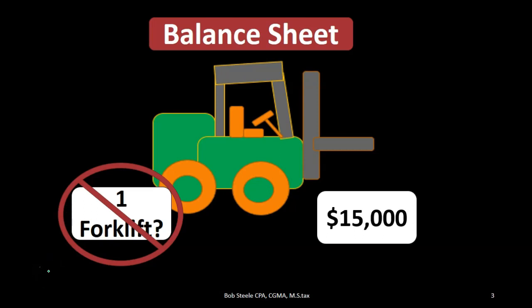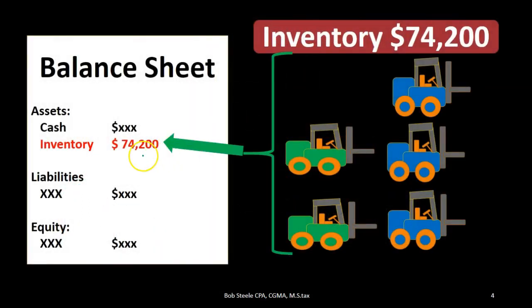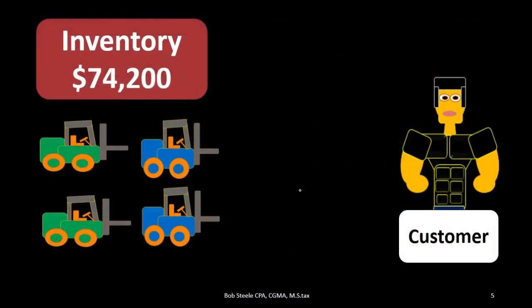We know it's $15,000 because we purchased it on a free market, whether with cash or a combination of cash and credit. That purchase price gives us the $15,000 amount. The $74,200 of inventory reported on the balance sheet is backed up by these five forklifts. The problem happens when we actually sell a forklift — what is the cost of that item? How much of the $74,200 do we need to reduce it by when we sell one forklift?